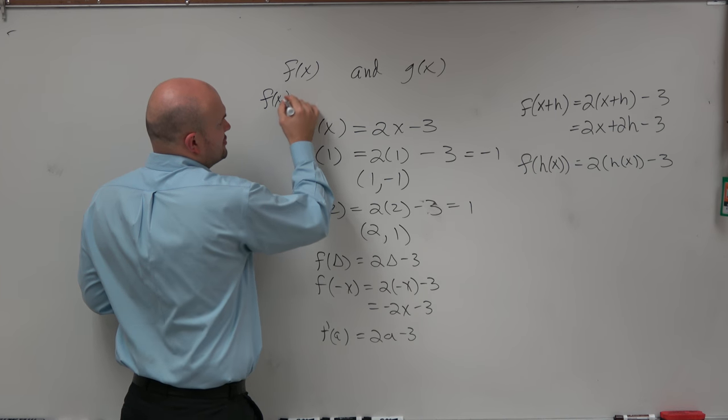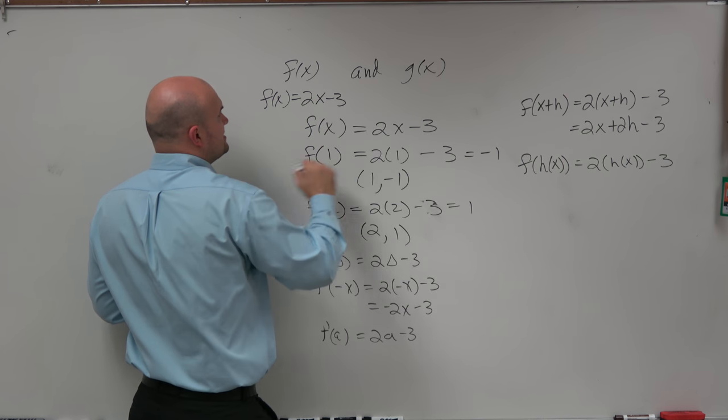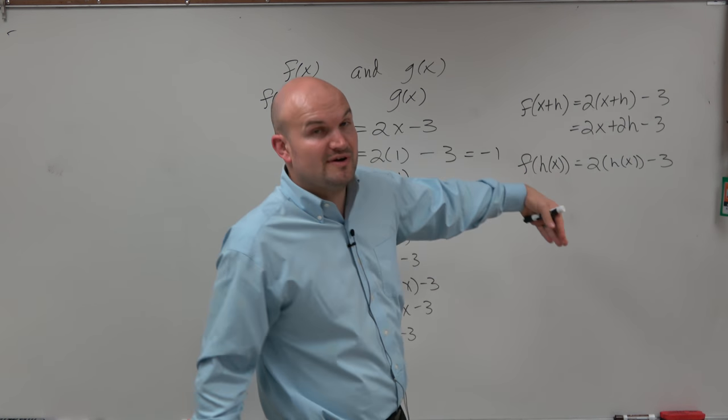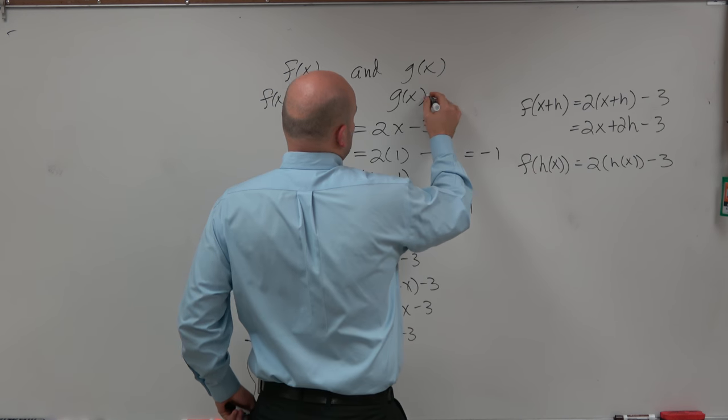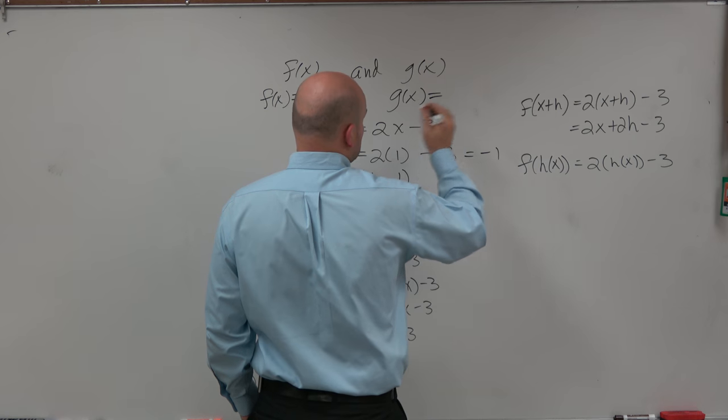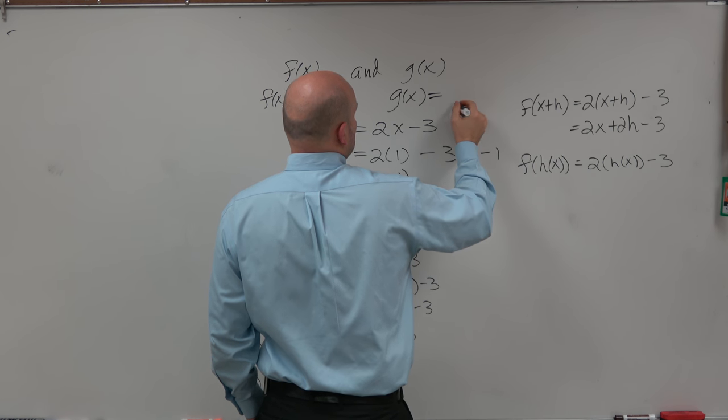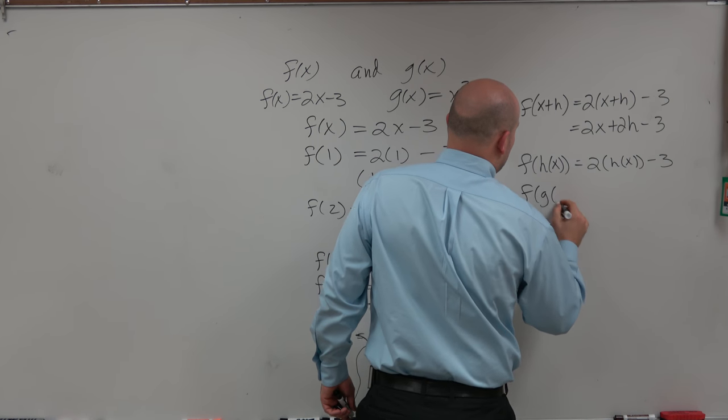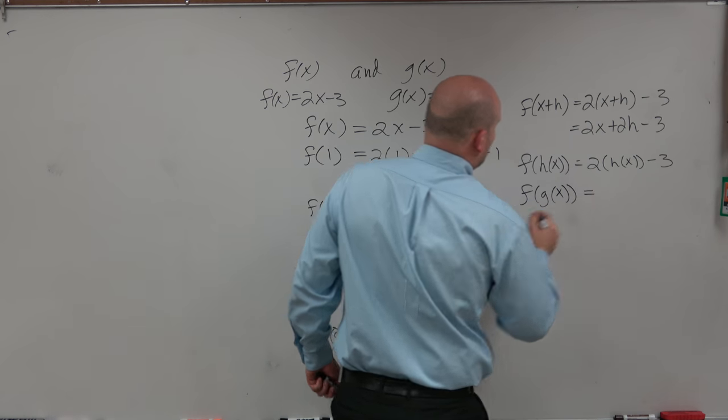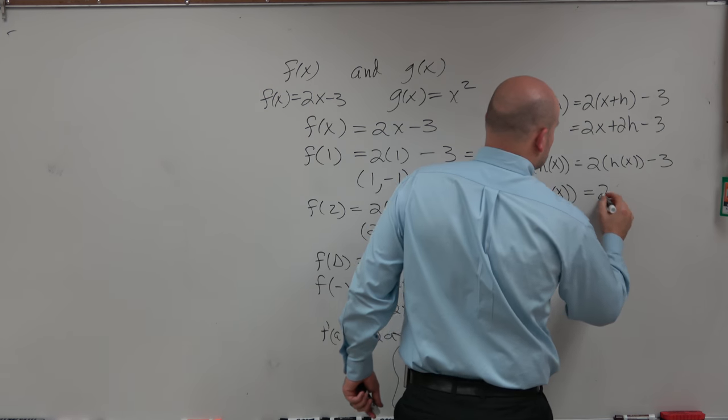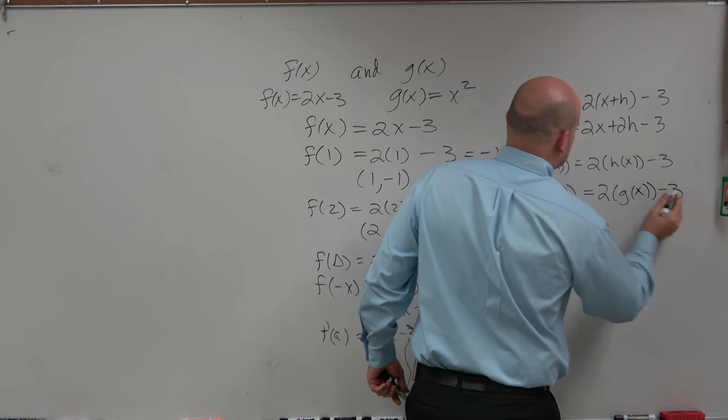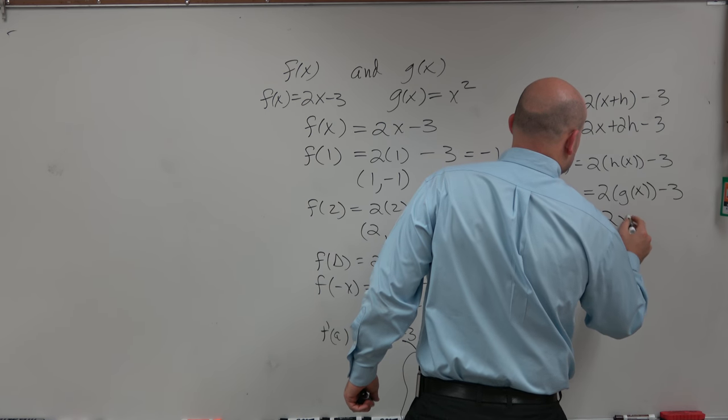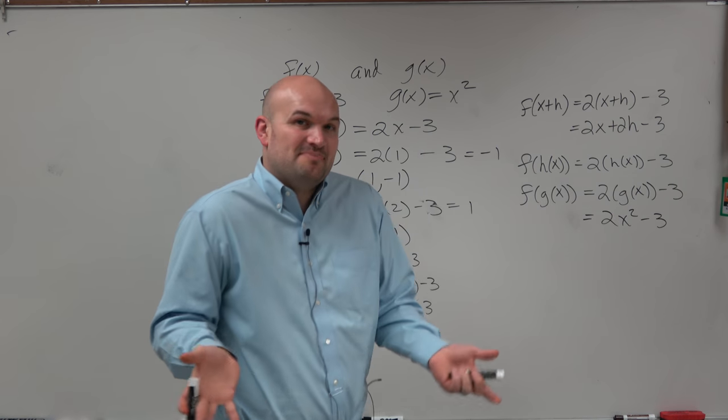So let's stick with the f of x function is 2x minus 3. But now let's call g of x, let's actually give that a rule. Because up to this point, we were just saying f of x had a rule, g of x or h of x did not have a rule. Let's call g of x, let's give this another rule, let's just call this x squared. So therefore, if now I have the function f of g of x, well, now basically what I'm going to do is I'm going to plug in g of x, 2 times g of x minus 3, like I did for h of x. But now I know what the rule is of g of x, so now I'm simply just going to do 2 times x squared minus 3. And that's basically composition.